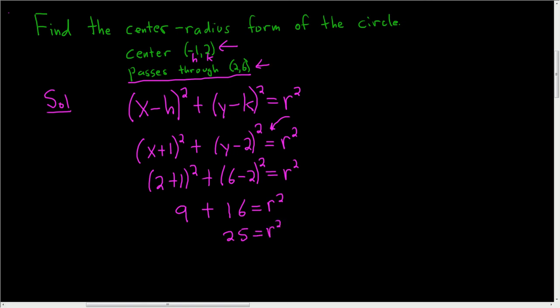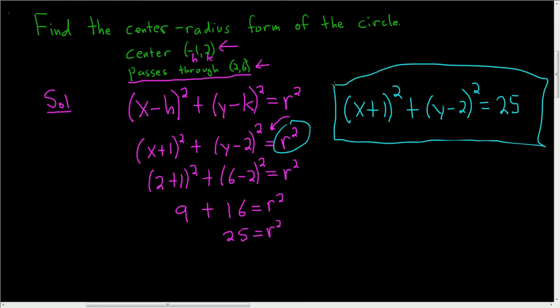To finish, we'll write the answer down. So we'll just go back and replace r squared here. So we have x plus 1 squared plus y minus 2 squared and this is equal to 25. So that's the center-radius form of the circle.